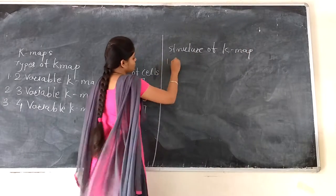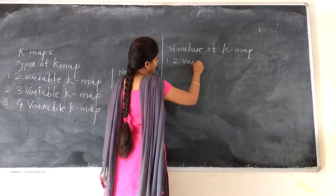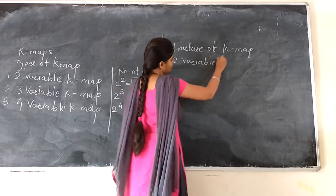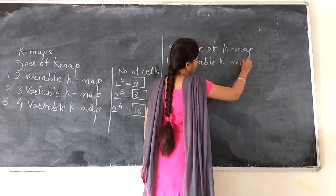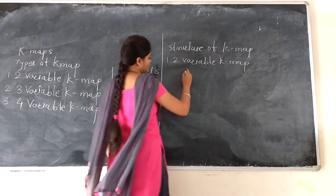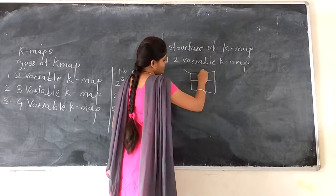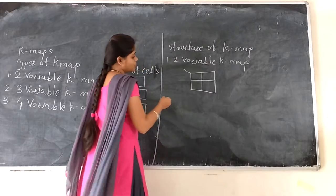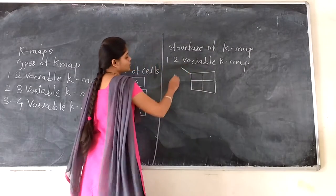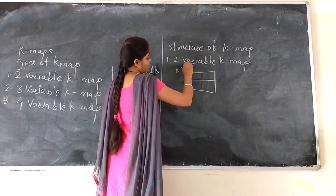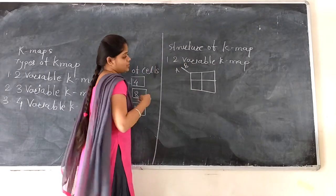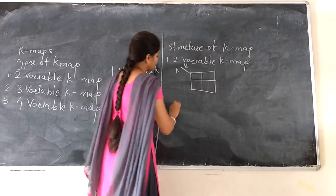First of all, we will discuss two variable K-map. So as four cells are required, structure is divided as two rows and two columns. On row you can represent one variable, on column you can represent another variable.